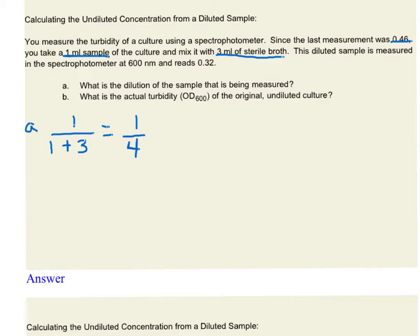Now that we know the fraction, we can calculate the actual turbidity, or OD600, of the original undiluted culture, since that's what we're interested in.